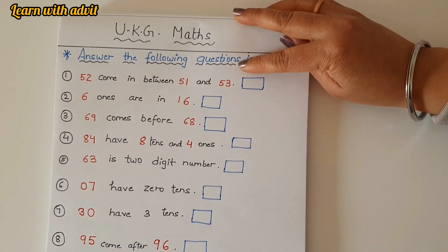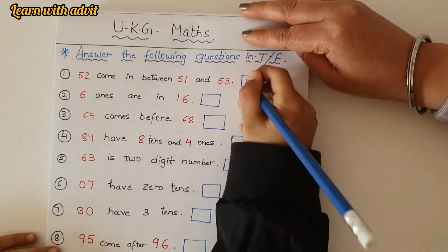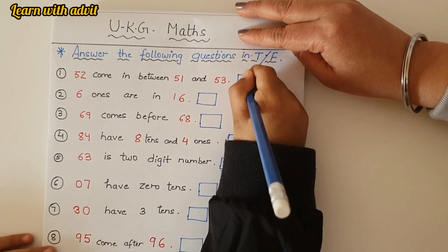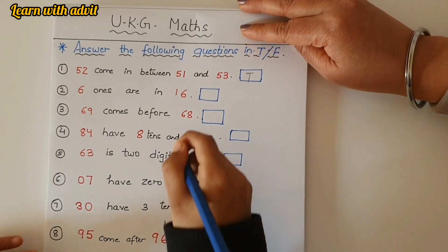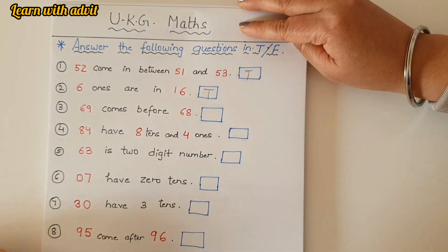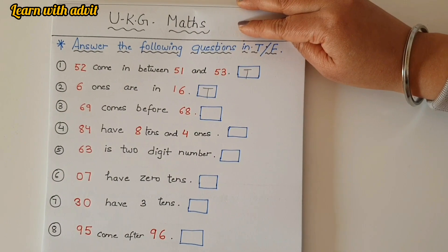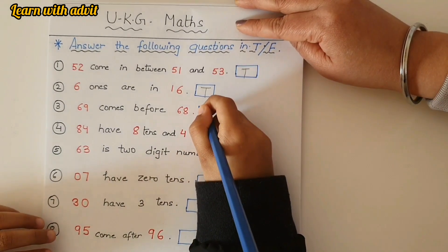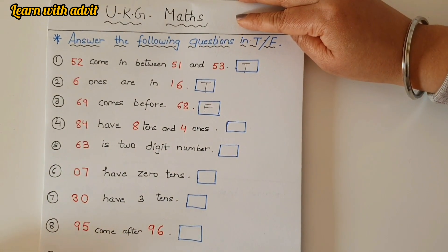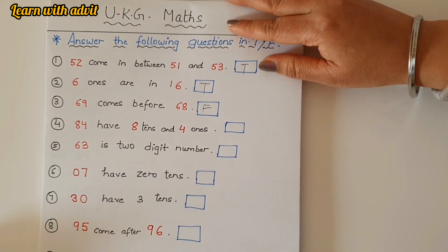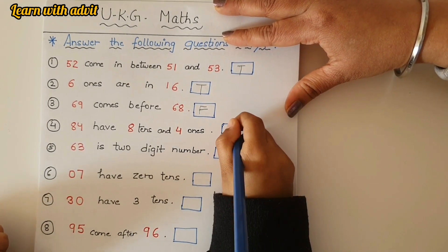This is the true false question. Okay, you have to write T for true and F for false. 52 come in between 51 and 53. True, very good. T for true. Six ones are in 16. Yes. 69 comes before 68. No, it comes after 68.